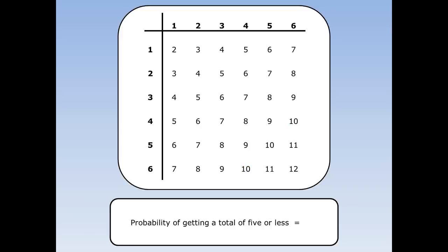What's the probability of getting a total of five or less? Here are all the places you get five or less — all the fives, fours, threes, and the two. And there are 10 of them altogether, so the chance is 10 out of 36. What's the probability of getting a total greater than 10? Well greater than 10 doesn't include 10. So here are the places greater than 10 — the 11s and the 12. And there are three of them, so the probability is 3 out of 36.